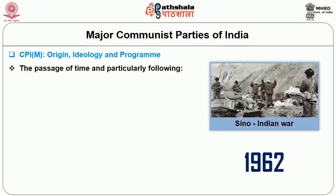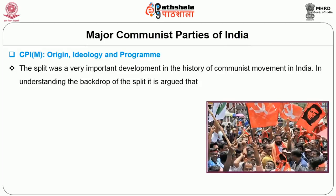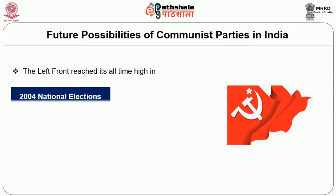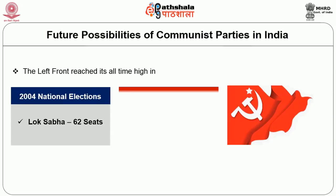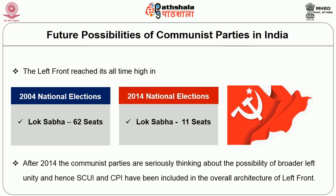With the passage of time, and particularly following the Sino-Indian War of 1962, the CPI was divided into CPI and CPIM. This split was a very important development in the history of the communist movement in India. The right faction followed the Soviet line on transition, backed the progressive bourgeoisie's leadership of the Congress, and embraced parliamentary over extra-parliamentary activism. The Left Front reached its all-time high in the 2004 national elections, securing 62 seats in the Lok Sabha, but within a decade it shrank to 11 seats in the 2014 Lok Sabha election. After 2014, the communist parties have been seriously thinking about the possibility of broader left unity, and SUCI and CPIM (Liberation) have been included in the overall architecture of the Left Front.